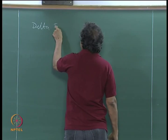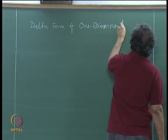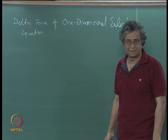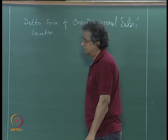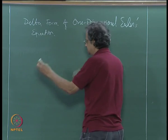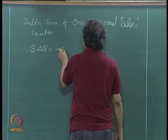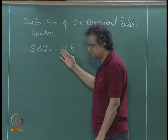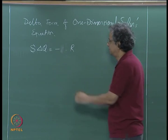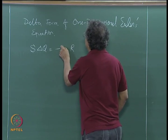If I look at the delta form, we have already derived the delta form of the one-dimensional Euler equation. It is of the form: S times delta q equals minus delta t times R. I will absorb the delta t into R, so it gives S delta q = -R. It does not matter — we will leave it as it is.